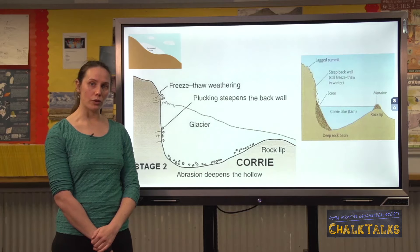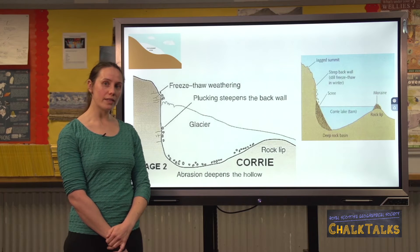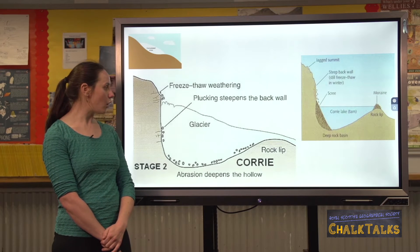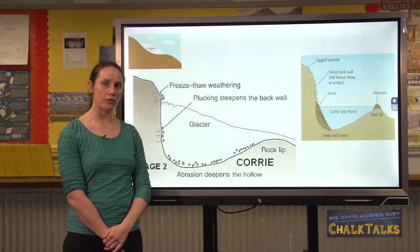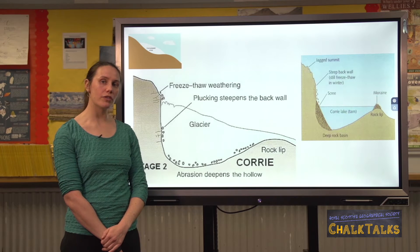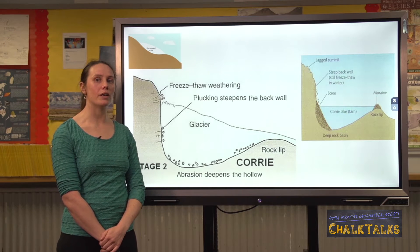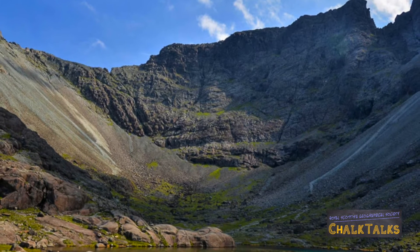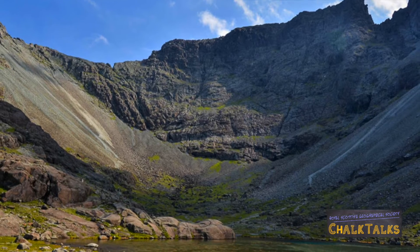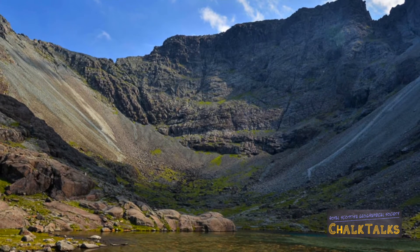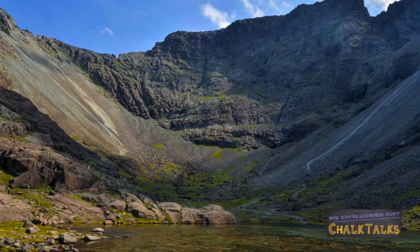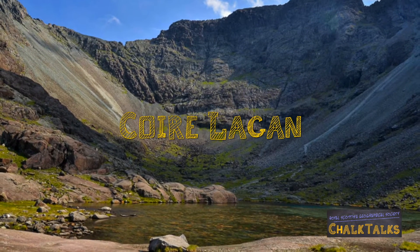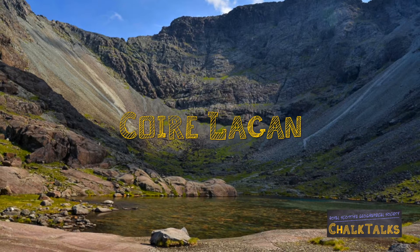Once the ice has retreated, there's often a corrie lochan left in the bottom of the corrie if it's deep enough to reach the water table. In the exam there's one mark available for giving a named example of a glacial or coastal feature — this is Corrie Lachain on the Isle of Skye.